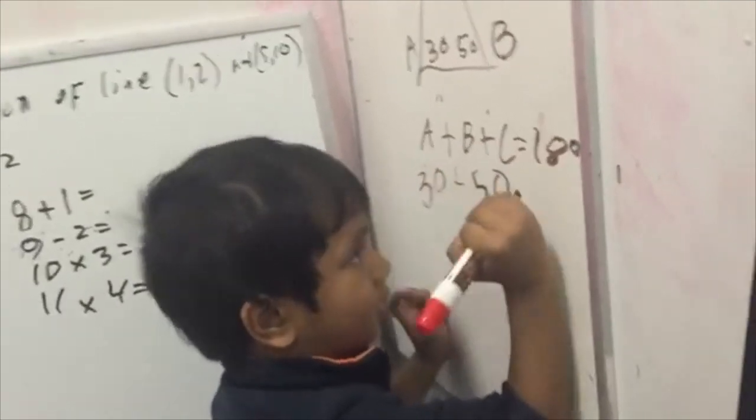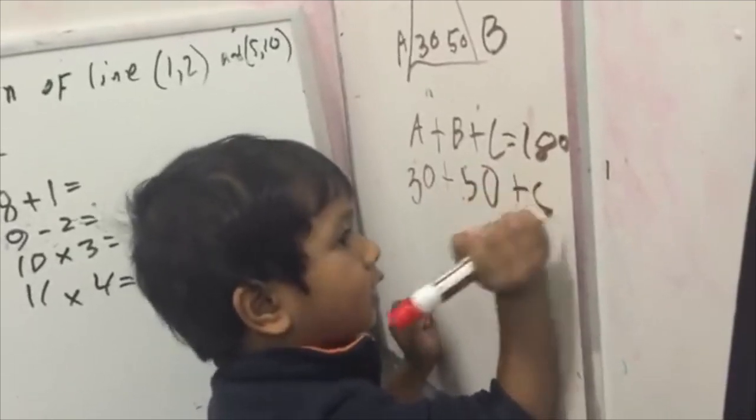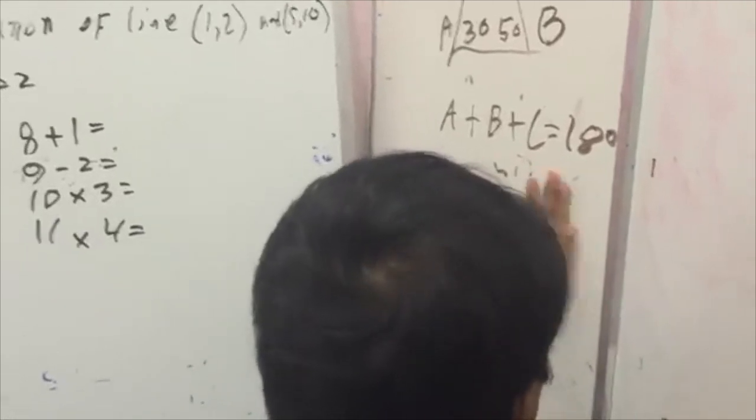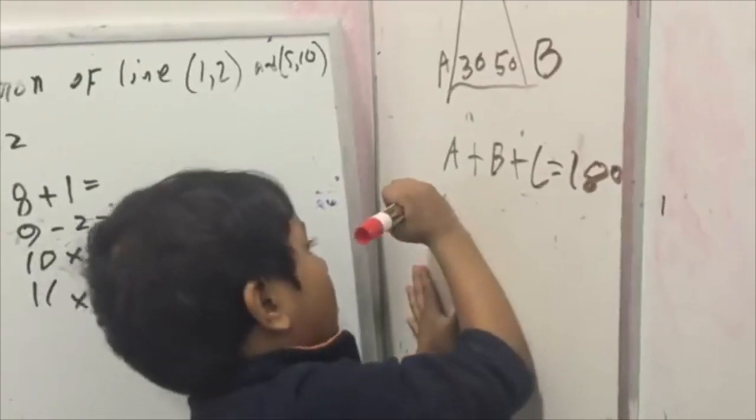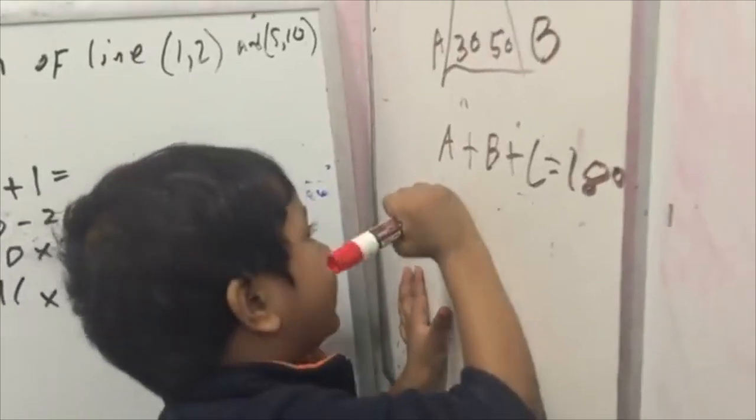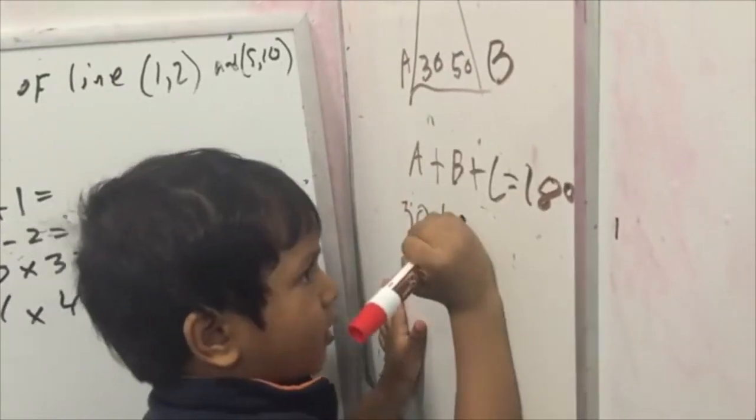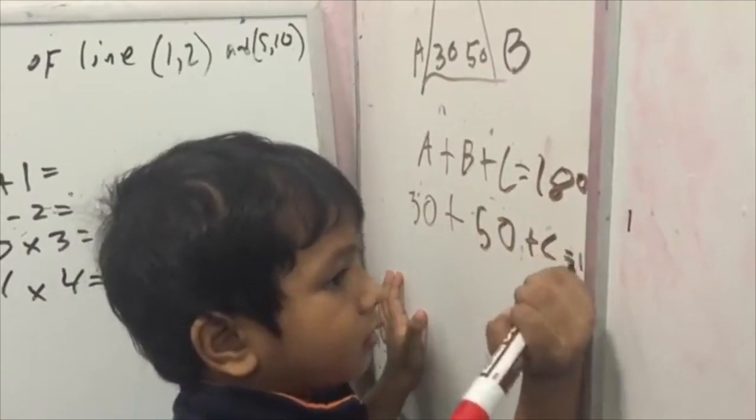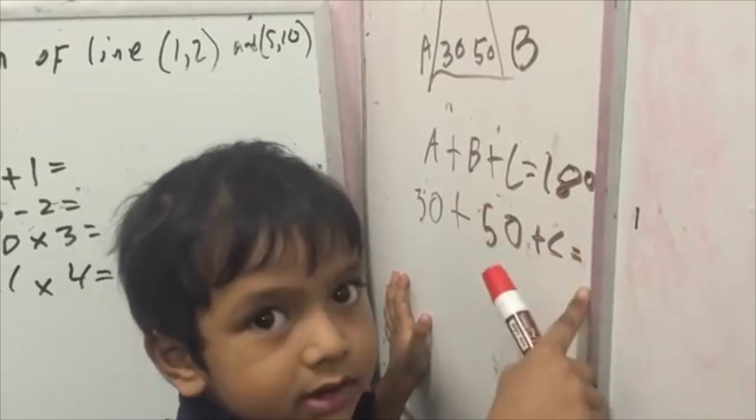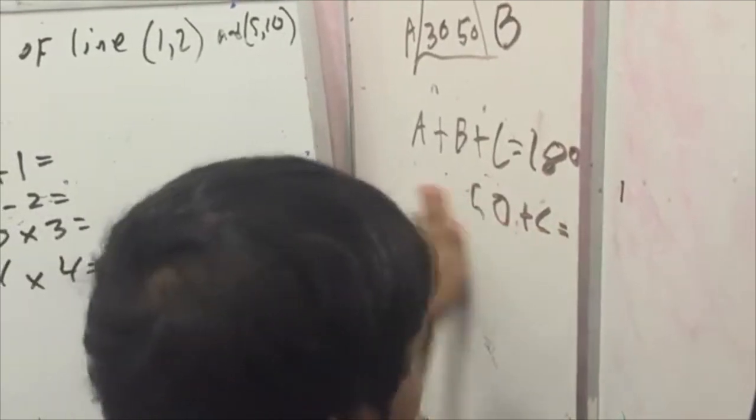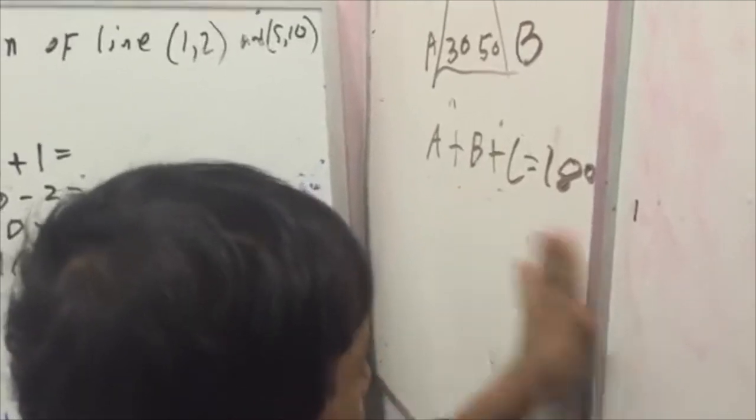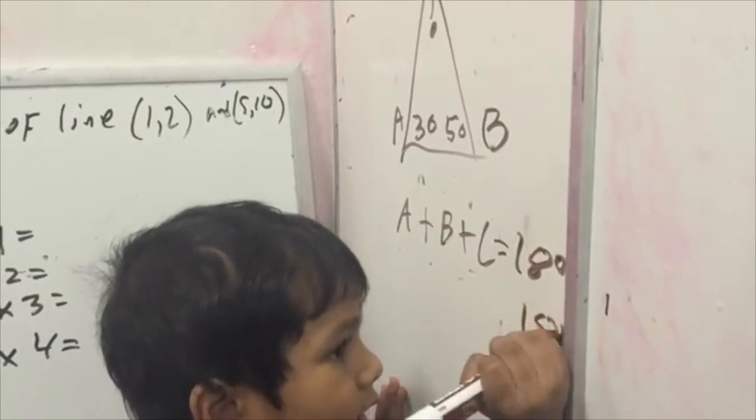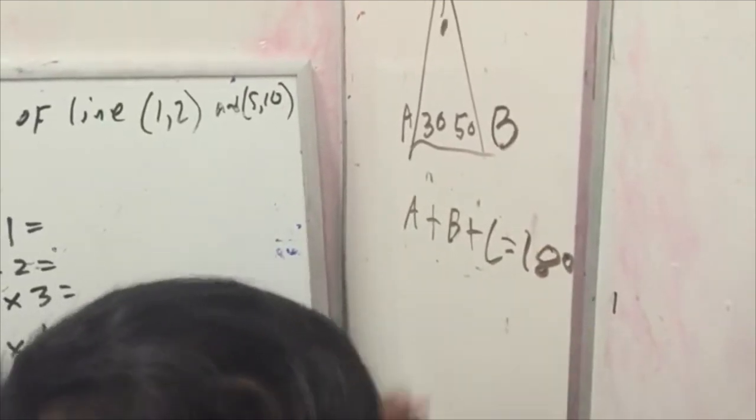But you don't know C, that's why plus C... we have no more space daddy. 30 plus 50 plus C is... hey there's no space daddy, no that's not good. It's 180, it's right over there.